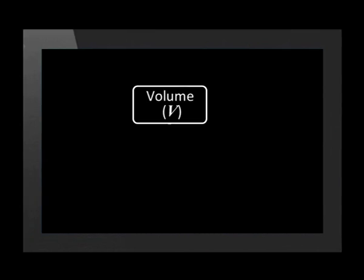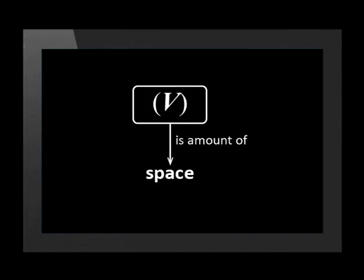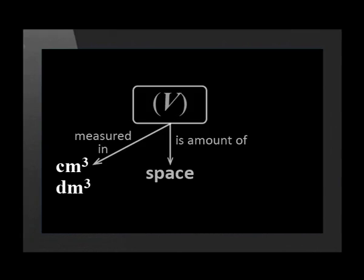We are also familiar with the concept of volume. The symbol of volume is V. A gas's volume is how much space it takes up. We often measure gas volume in centimeters cubed, also called milliliters. Or in decimeters cubed, also called liters.